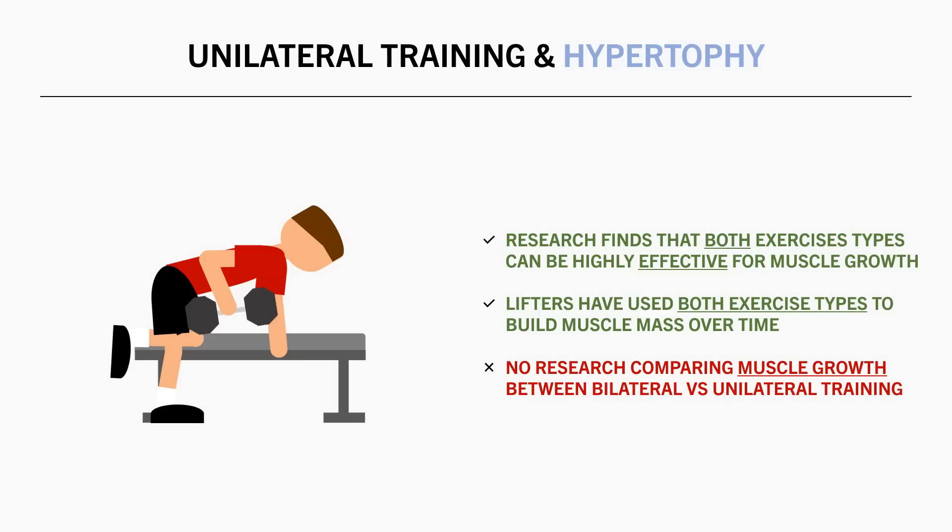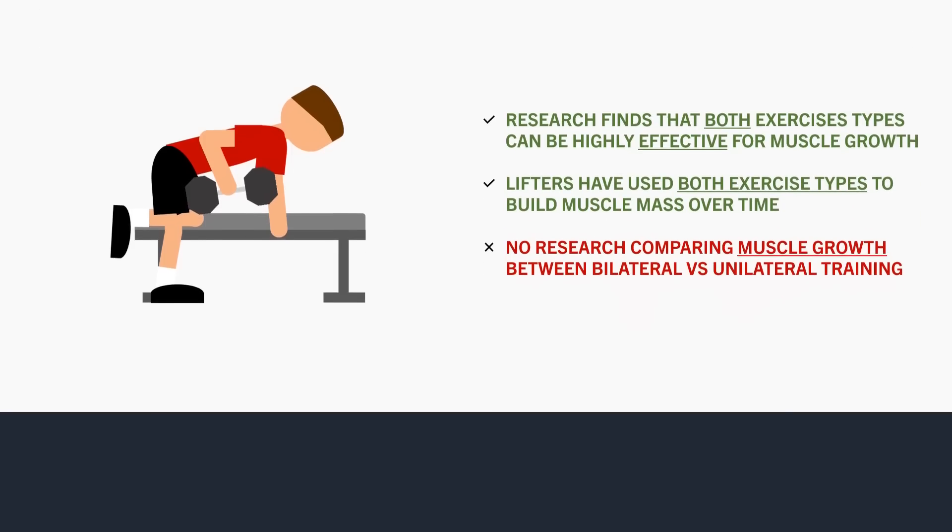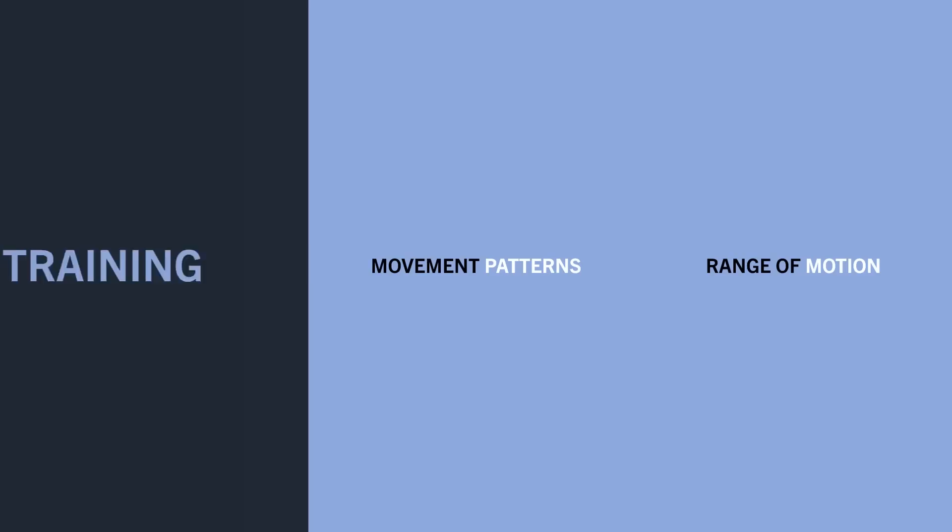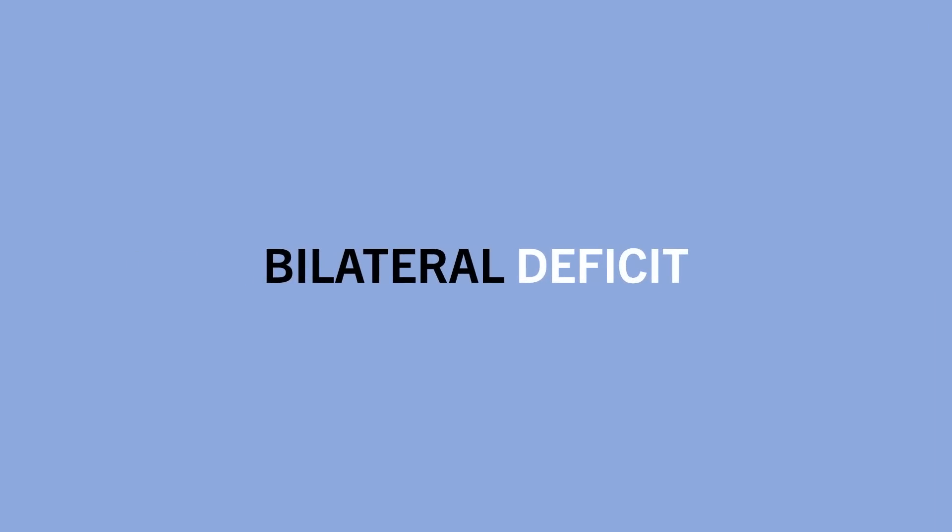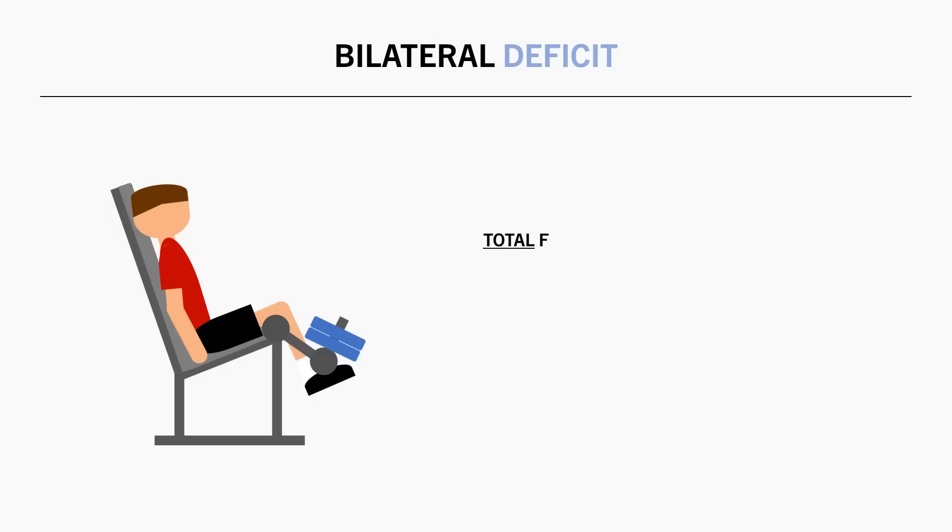First let's cover the potential benefits that unilateral training can have over bilateral training. There are a few hypothetical benefits that unilateral training may have, although we should remember that this is all based on indirect evidence and mechanisms. The first potential benefit that unilateral training may have for muscle growth is due to what is known as the bilateral deficit. This principle suggests that we cannot produce as much force with both limbs together compared with the sum of each limb working independently.